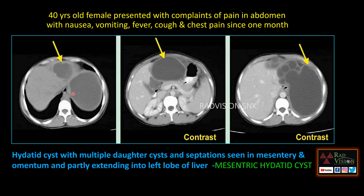Next case: a 40-year-old female with pain in the abdomen, vomiting, fever, and cough. You can see there is a cystic lesion in the left abdomen with multiple daughter cysts within the mesentery, extending anterior to the stomach and even into the left lobe of the liver. This is a mesenteric hydatid cyst.